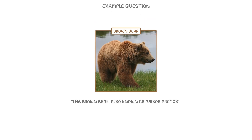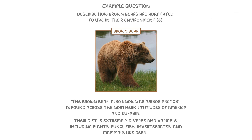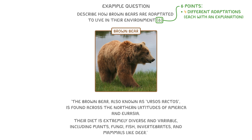So putting all of this together, let's look at a typical question. The brown bear, also known as Ursus arctos, is found across the northern latitudes of America and Eurasia. Their diet is extremely diverse and variable, including plants, fungi, fish, invertebrates, and mammals like deer. Describe how brown bears are adapted to live in their environment. In a question like this, which is six marks, we're going to need six points, or probably three different adaptations each with its own explanation. But just to be sure, we should try to do at least four adaptations. The idea is not that you're meant to know anything about brown bears, but instead, by using the picture and the information, you can make some good guesses.